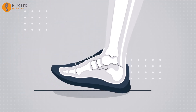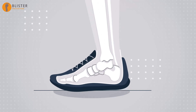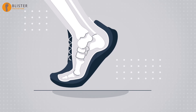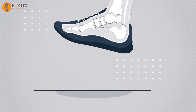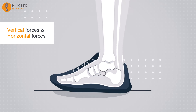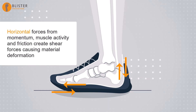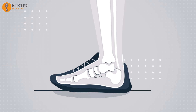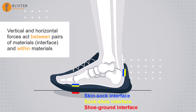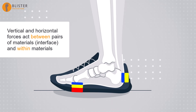To understand how friction blisters occur, we need to look at how the foot and shoe move while on the ground. We need to appreciate all the material layers involved and we have to look at forces. There are vertical forces and horizontal forces. Vertical forces from impact and gravity cause compression. Horizontal forces from momentum, from muscles pulling on bones and from friction create shear forces which make materials bend and stretch.